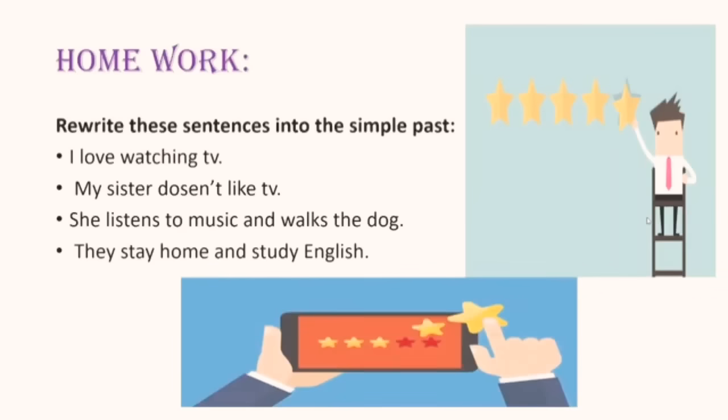Second one, my sister doesn't like TV. This one is negative form. So each sentence has a form, is it negative, interrogative, or affirmative? But the verb is in present. So your job, you have to change the tense of the verb only. For example, I love watching TV. Love, I would say in the past, I loved watching TV. So love becomes L-O-V-E-D in the past. I give you just an example so as to do the three other sentences on your own.